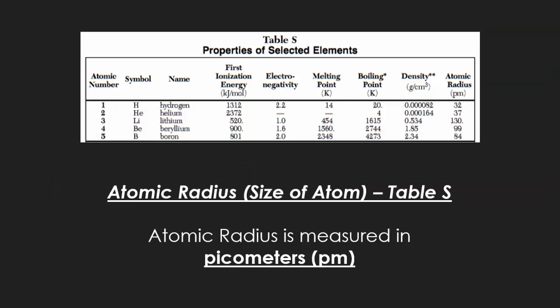Atomic radius or the size of the atom can be found for every element on table S. It is in picometers, it's on the last column.